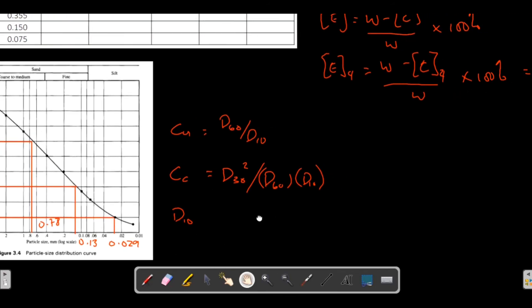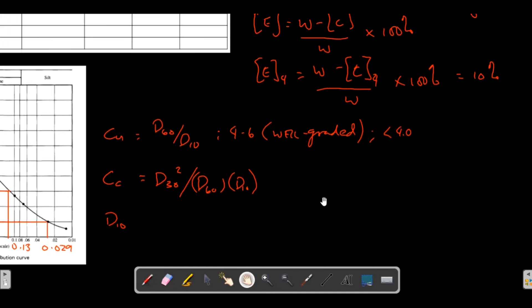Now what's the significance of CU and CC? For values of CU in the range of 4 to 6, your soil sample is said to be well graded. If you have less than 4.0 for CU, you have a uniformly graded or poorly graded soil sample. It will help you identify how well graded your soil sample is. For CC, a value of 1 to 3 is for well graded soil. The lower the number, the more poorly graded is your soil sample.